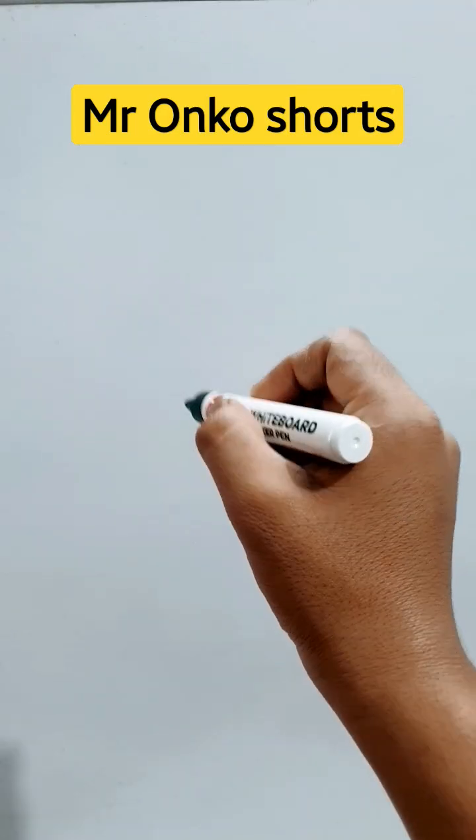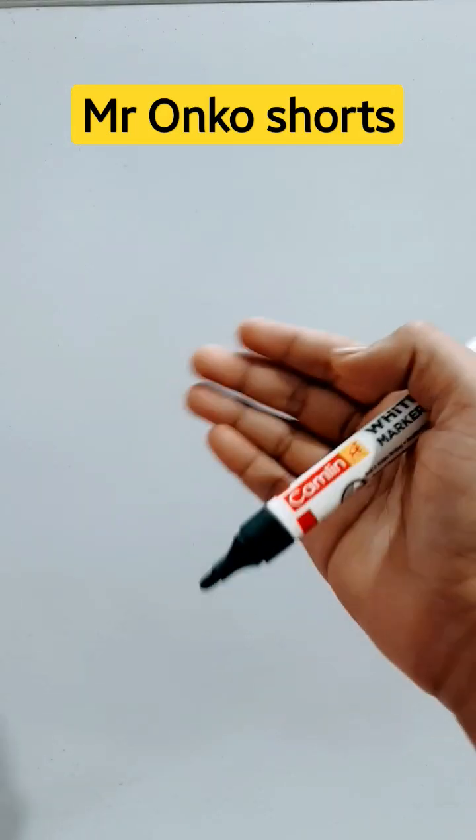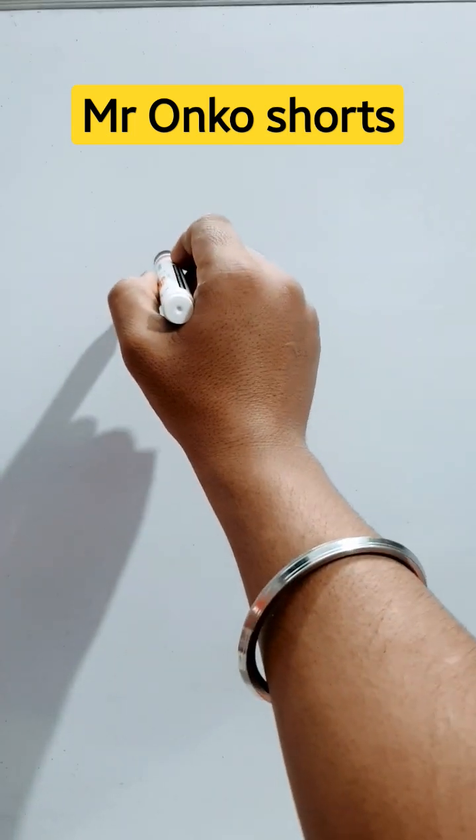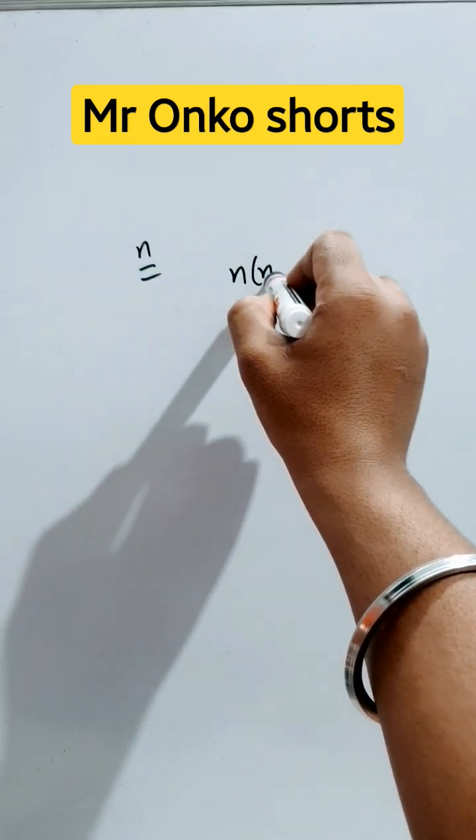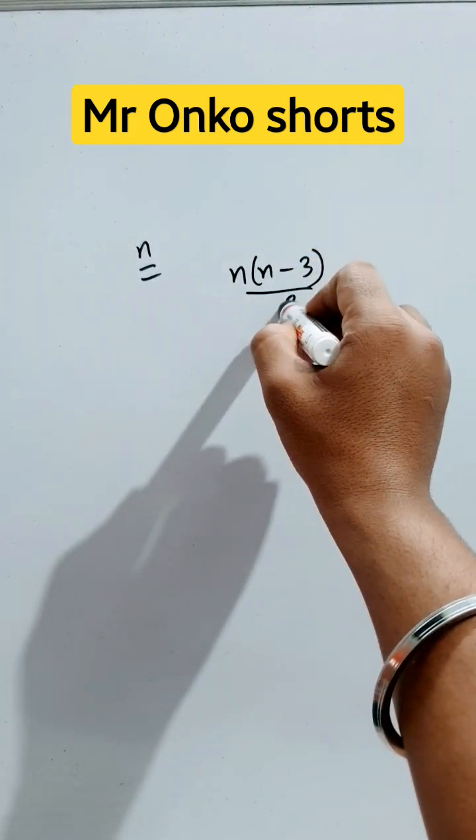Hello students, welcome to Mr. Ongo Shorts. Today we will prove a combination problem. We all know that if n sides of a polygon are given, then the number of diagonals is n(n-3)/2.